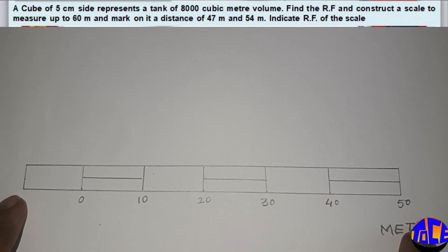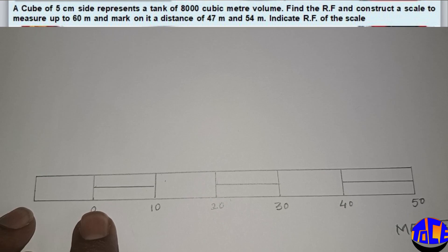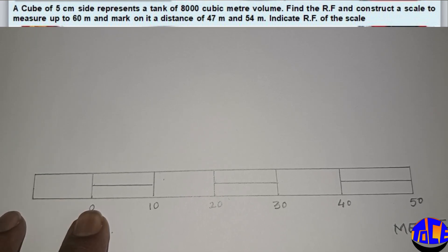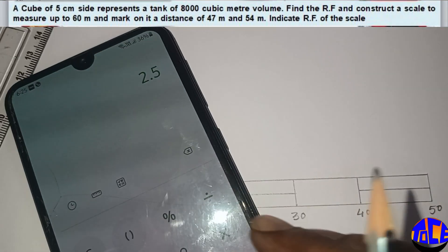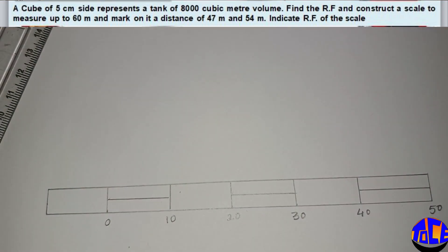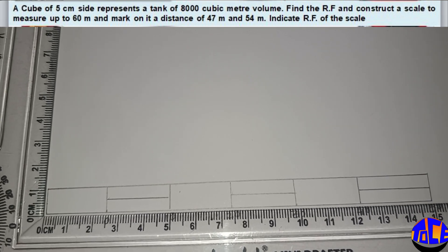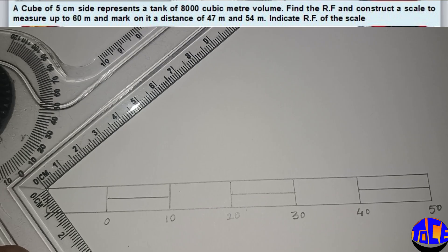Here we can show up to 60 meters, but the question is also asking to show a distance of 47 meters and 54 meters. So 40 we can show, but we also need to show 7 meters. For that reason, let us divide the first box into meters. This part is equal to 10 meters, and 2.5 centimeters should be divided into 10 equal parts, giving 0.25 centimeters or 2.5 mm — which is very difficult to mark directly. So what we will do, we will draw a diagonal line of 4 centimeters and divide that into 10 equal parts. That will be better.